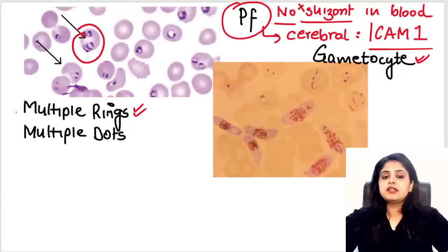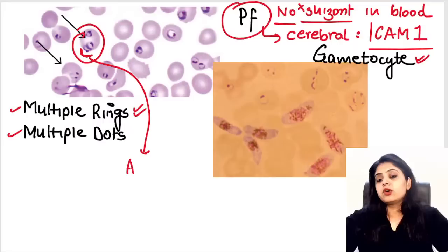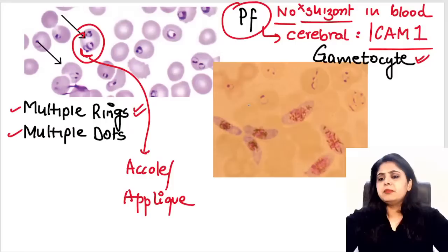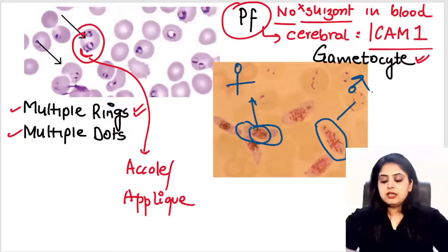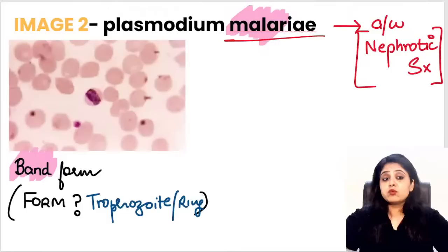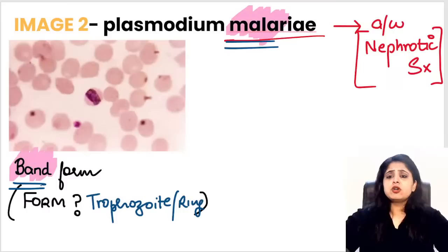In falciparum, there are many rings and many dots. The marginal dot is known as the Accolé or appliqué form. For the gametocytes, females keep everything well-organized so the organized one is the female gametocyte; males keep things scattered so that is the male gametocyte. What I'm expecting in the exam is identification of the mala-band — the band form of Plasmodium malariae.